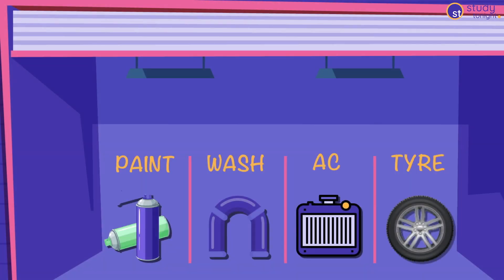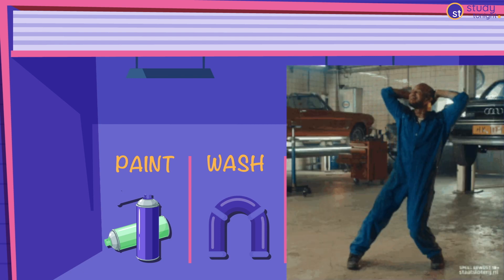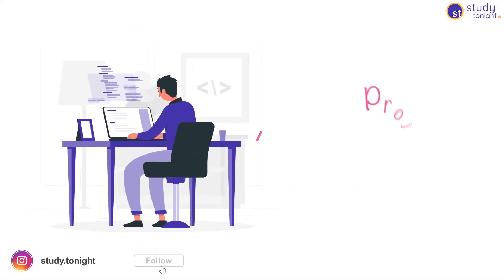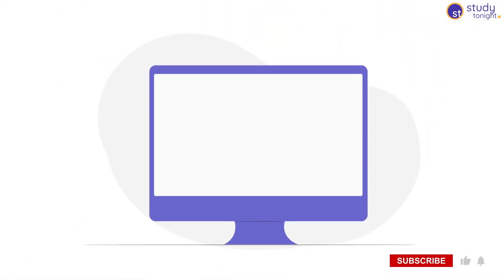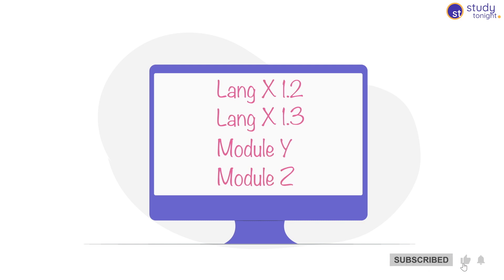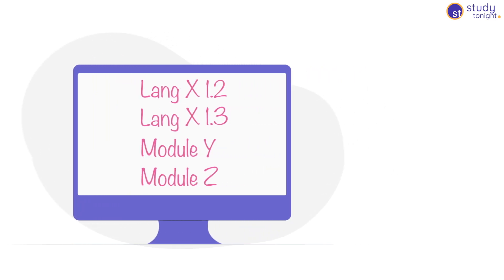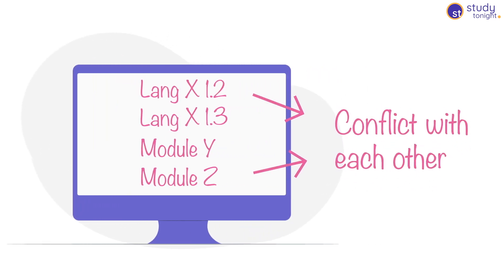Whereas if you create different sections inside your garage for all the different services you offer, with separate tools and machines for everything, you can properly manage it. Similarly, if you are a developer working on multiple different projects that require different setups — like different versions of programming languages, different libraries, etc. — trying to do all this on your local machine will create a huge mess because the different versions will create issues for each other.